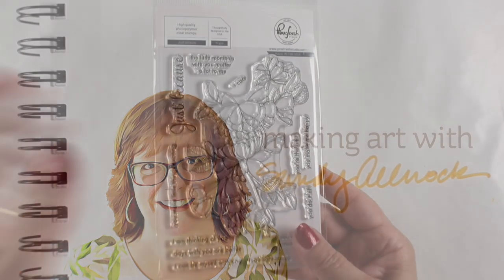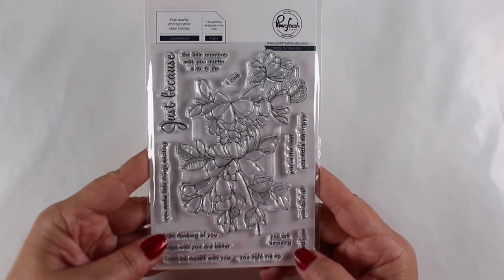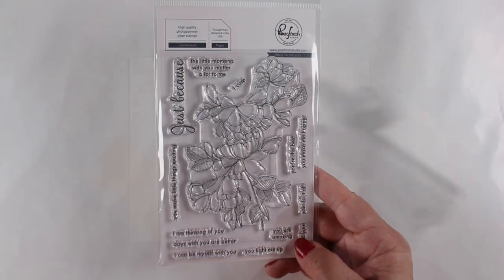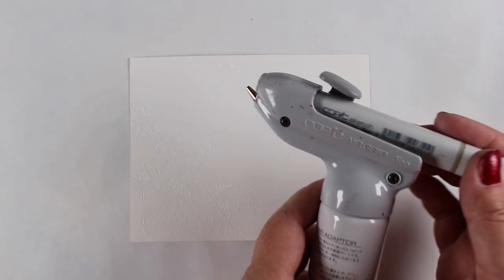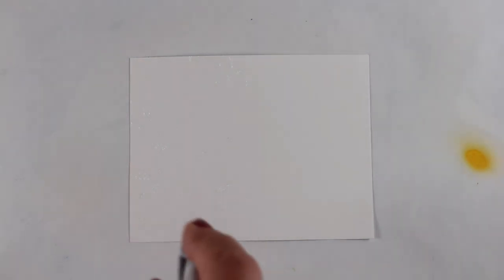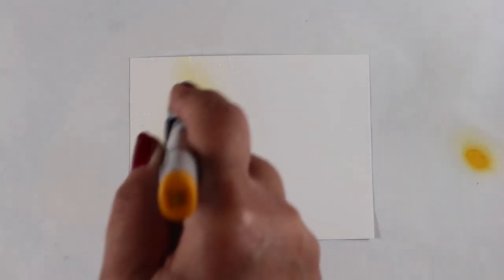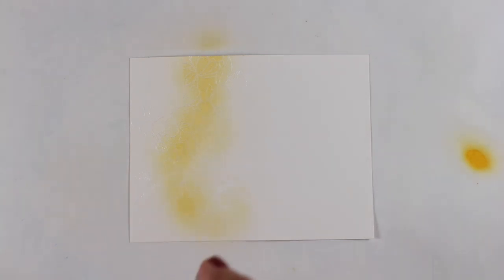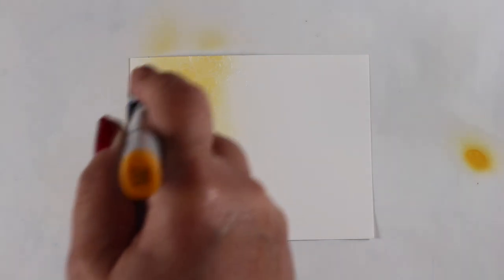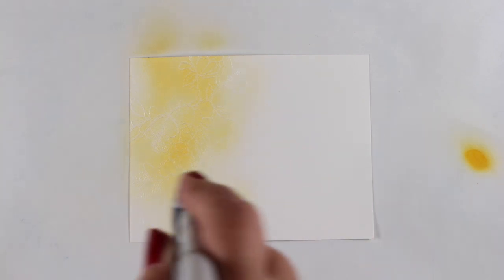The stamp set I'm going to be using today is from Pinkfresh and it's called Just Because. It has beautiful sentiments that go with it and the flowers are delicate and so gorgeous. I'm going to airbrush my background right over top of the stamped image. It was stamped in Versamark and then heat embossed with white detail embossing powder.